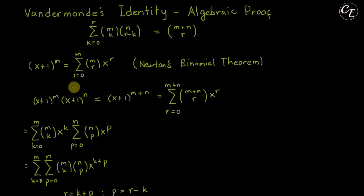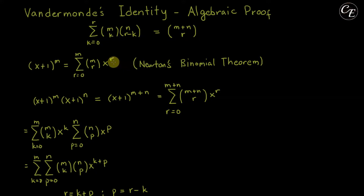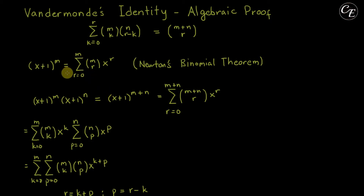Hello everyone. In this video, I am going to explain to you the algebraic proof of the Vandermonde's identity. In order to prove this, we need the use of Newton's binomial theorem, which states that x plus 1 raised to m is equal to the summation of m chooses r times x raised to r, from r equal to 0 until m. Now let us start with our proof.